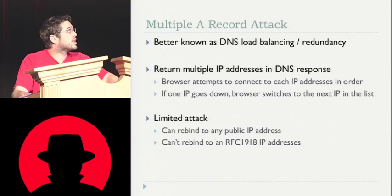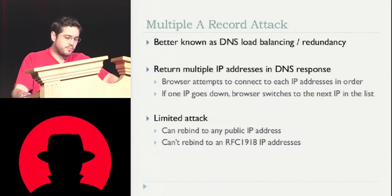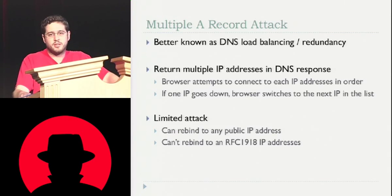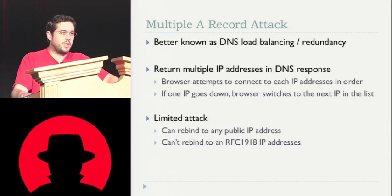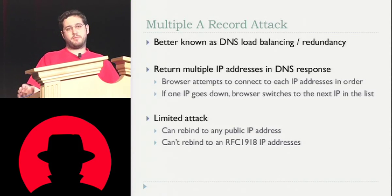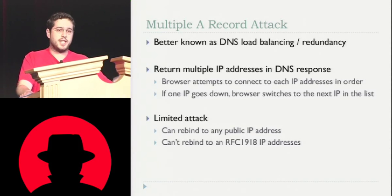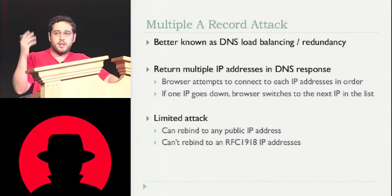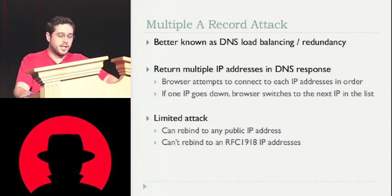I'm going to focus on using the multiple A record attack, which is one variation of DNS rebinding. Really, all it is is DNS load balancing — you return multiple IP addresses for a DNS lookup. Pretty much any major site does this; you do a DNS lookup on Google and you get five or six IPs back. What happens is the browser says you have three IP addresses, that's fine, and it tries to connect to each IP address in order. If one of those IP addresses goes down, it switches over to the next IP address in the list.